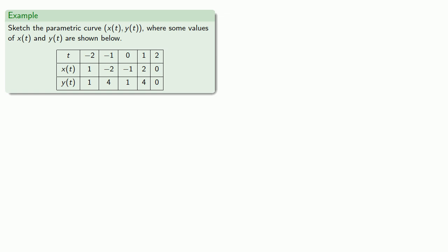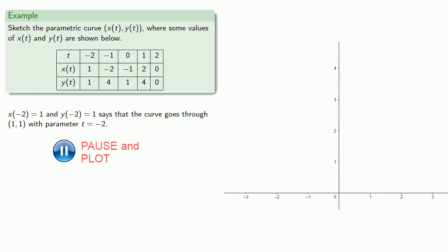Now to graph this, the x and y coordinates of the point come from the values of x(t) and y(t), so we'll plot the point and record the parameter value. We see x(-2) = 1 and y(-2) = 1, so the curve goes through (1,1) with parameter t = -2. We'll plot the point and remind ourselves that this is where t = -2.